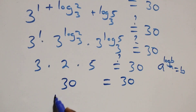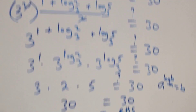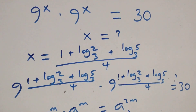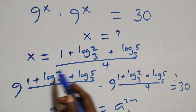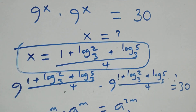The left-hand side equals the right-hand side, so we conclude that x equals (1 + log₃2 + log₃5) / 4 satisfies the given problem. Thank you for watching — don't forget to subscribe for more videos, turn on the notification bell, share this video, give a thumbs up, and put your comments. See you next class!